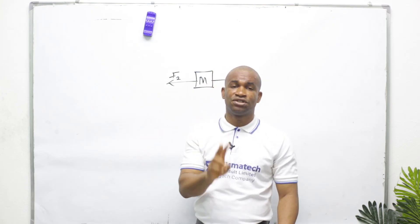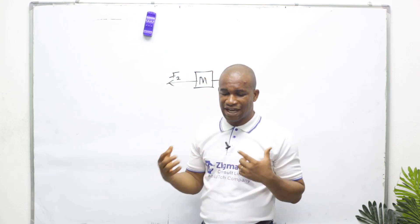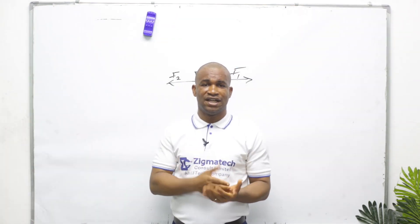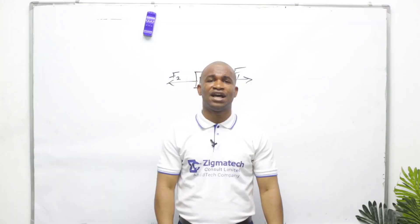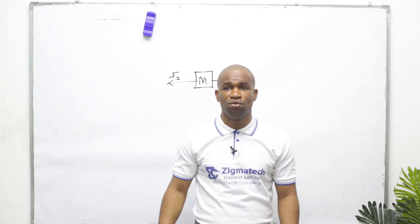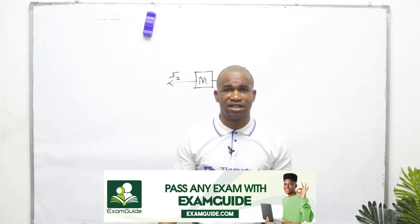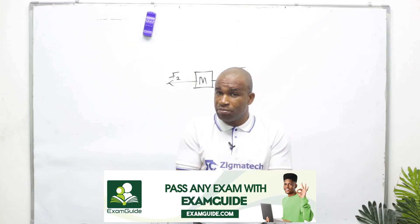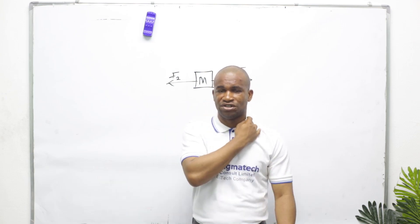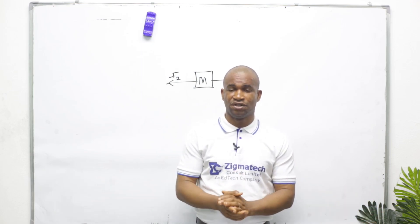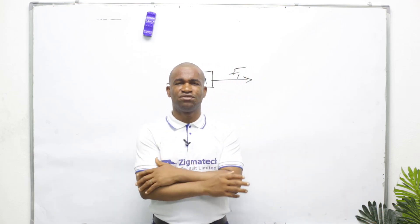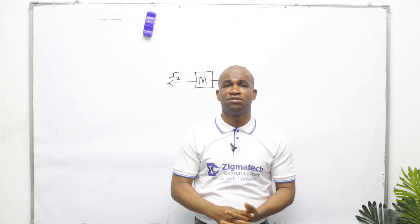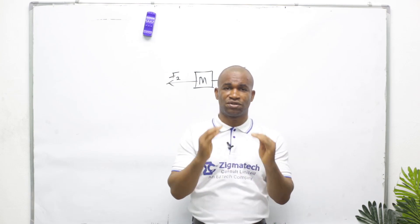For two vectors inclined at any angle, we use the parallelogram law of vectors. The parallelogram law can handle angles of 90 degrees, 180 degrees, or any angle. When dealing with more than two or three forces, you need to be very good at vector resolution. We will also be solving past UTME questions on this topic shortly.